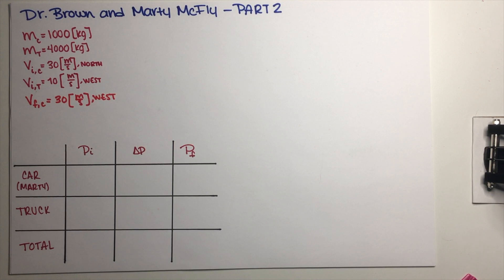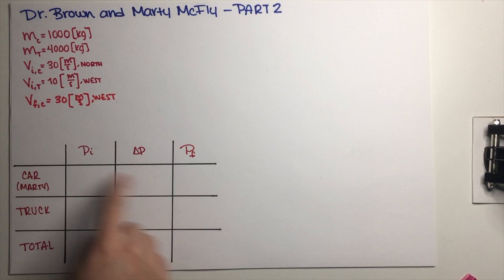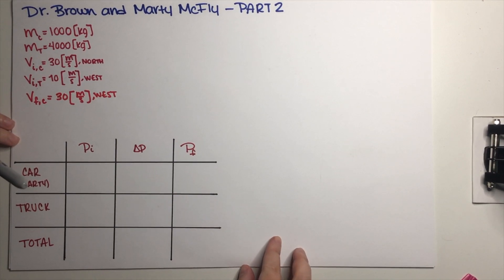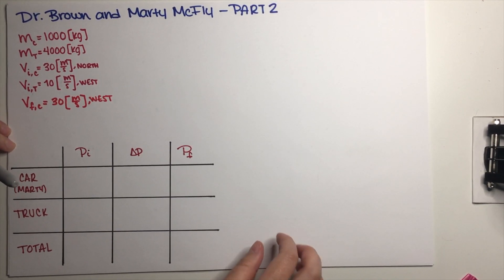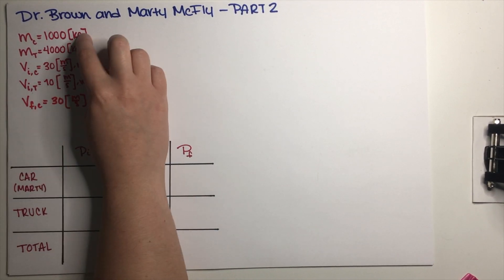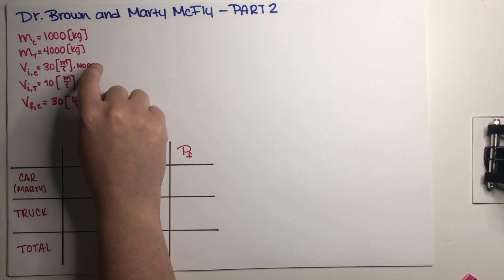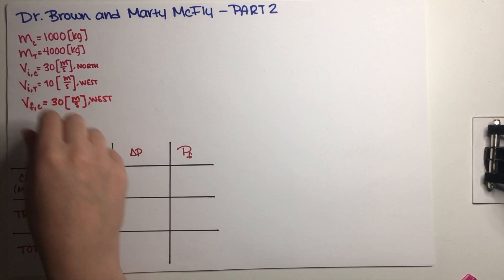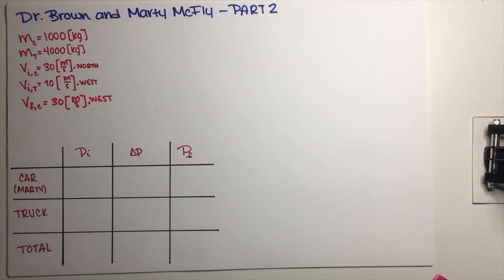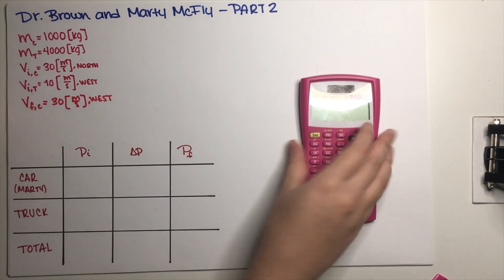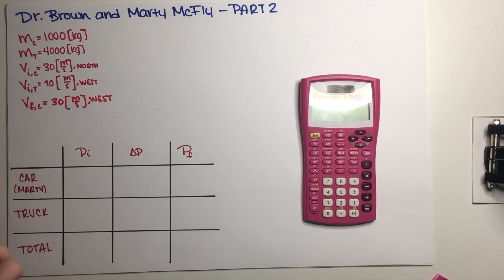I've copied all of the information over here. Please feel free to pause the video to give it a try yourselves. So let's get started. Basically all we have to do is fill in this momentum chart. Some things we can figure out right away because we do have both of the masses — the car and the truck — and we have the initial and final information for the car.